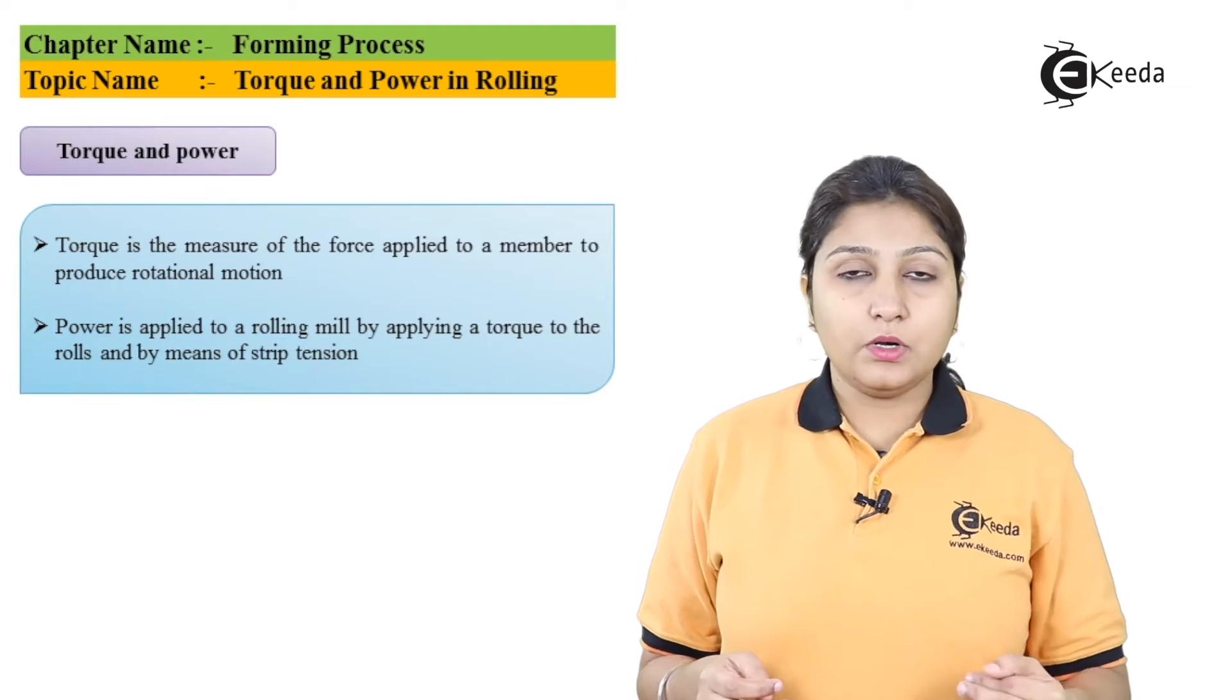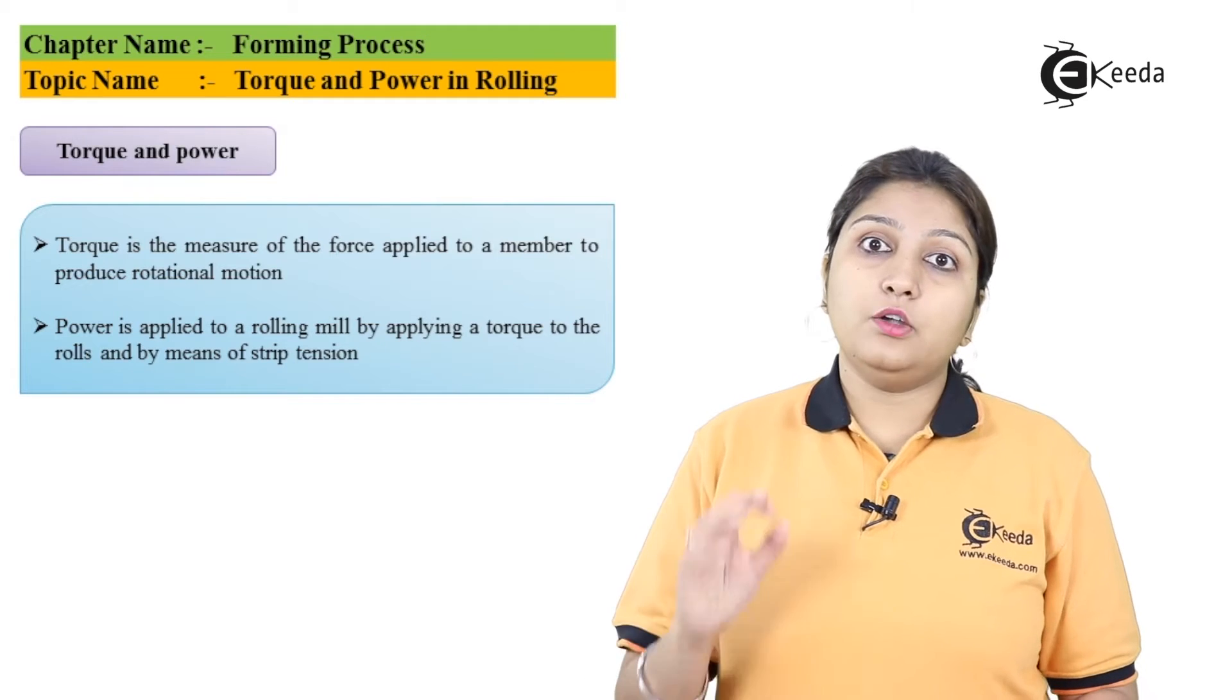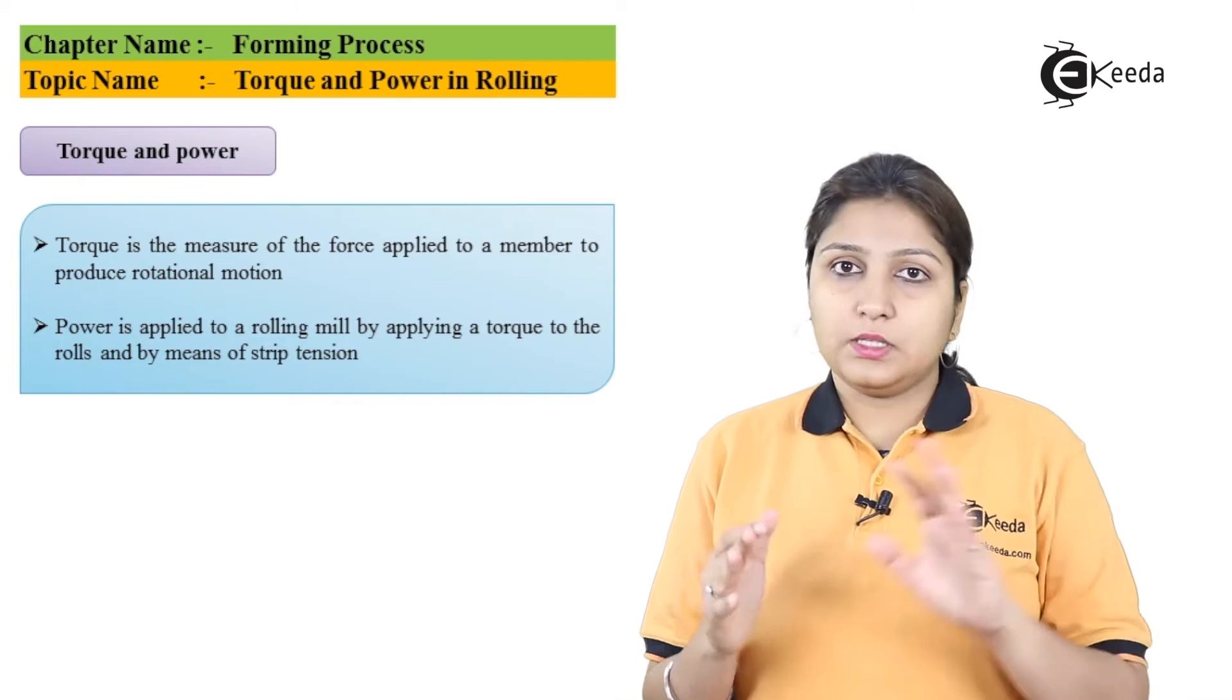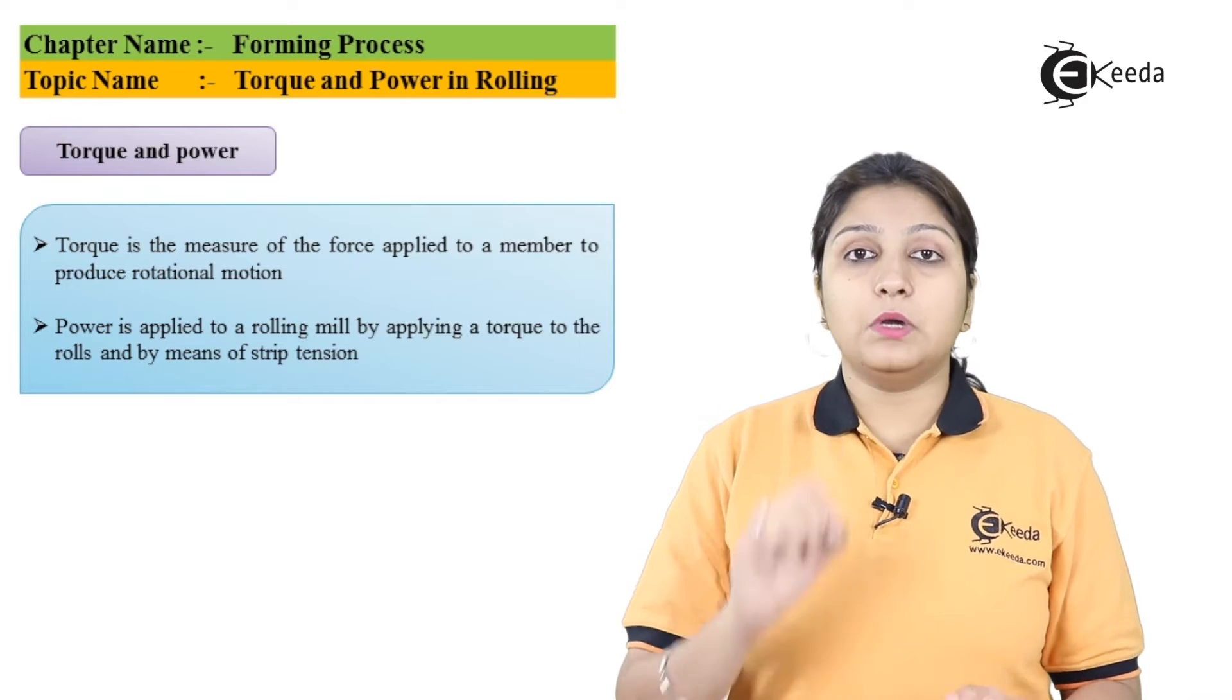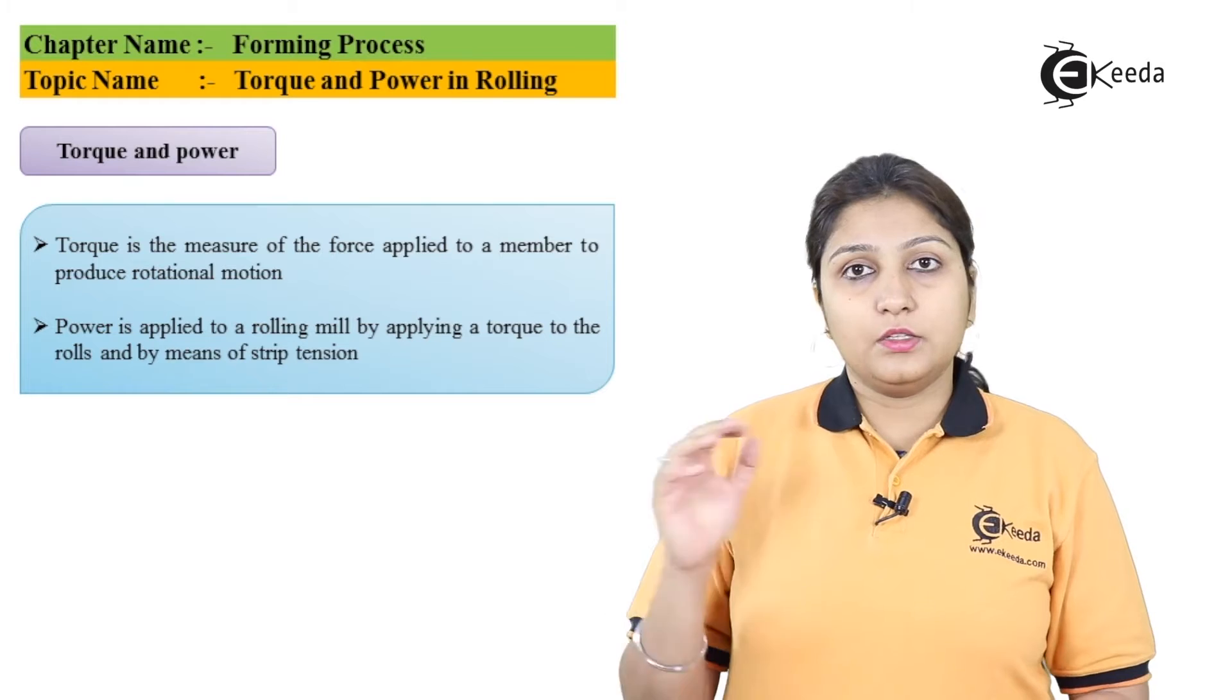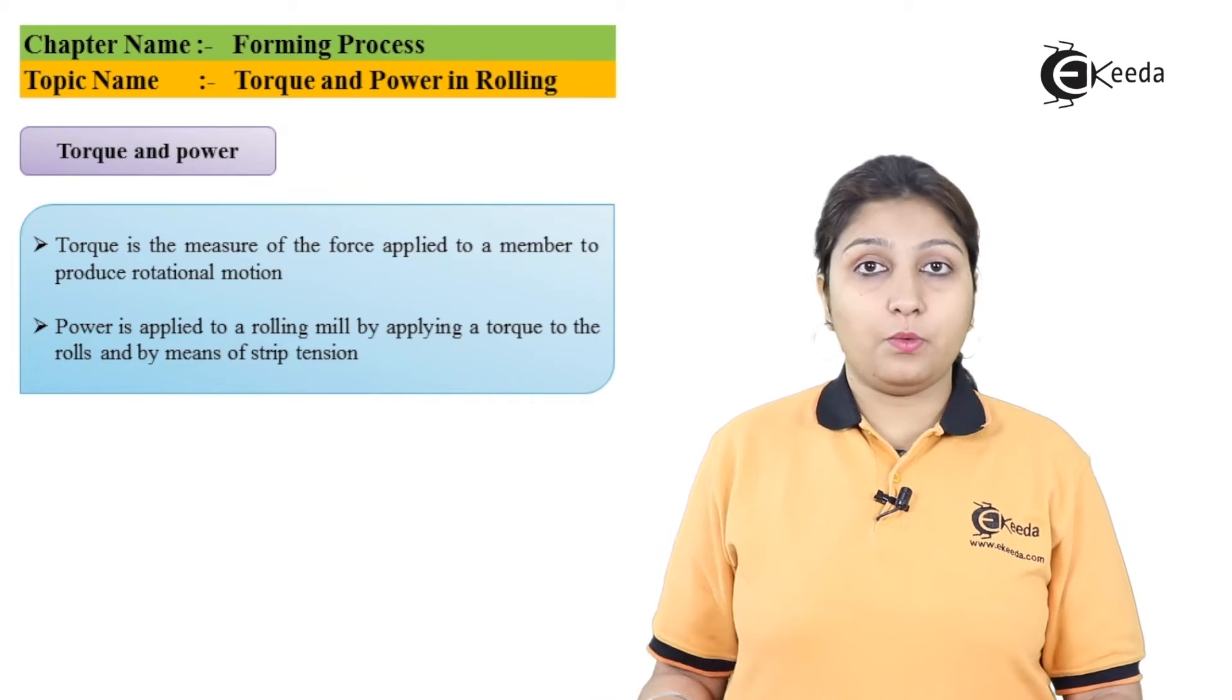When I talk about power, what is power? Power is torque applied to the rolls. Your rolls are moving, torque is applied, and when it is in tension with your material, torque and power go hand in hand. Strip tension plays a very important role while calculating your power.